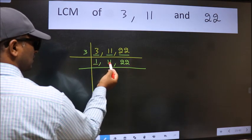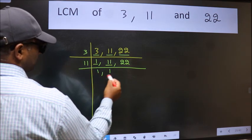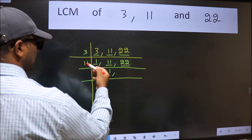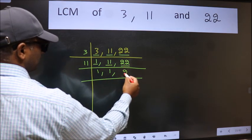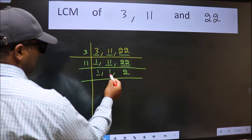So focus on the next number 11. 11 is a prime number so 11 wants 11. The other number 22, when do we get 22 in 11 table? 11 times 2 is 22. Now we got 1 here and here.